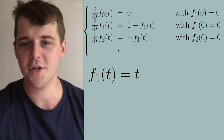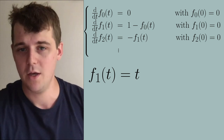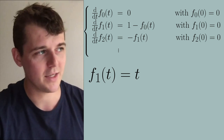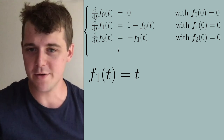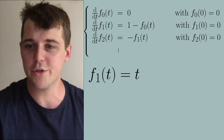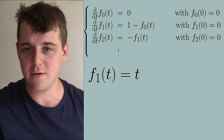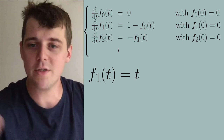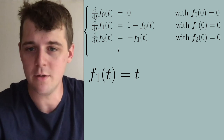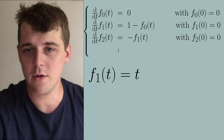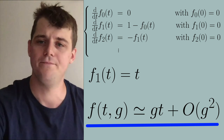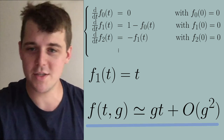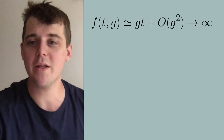We can repeat this process for every function f_j(t) in the series. The whole point of perturbation theory is that for small g we should be able to trust just the first few terms in our series as a really good approximation to the exact solution. Trusting first-order perturbation theory, to leading order our solution is g·t plus terms of order g² or higher.